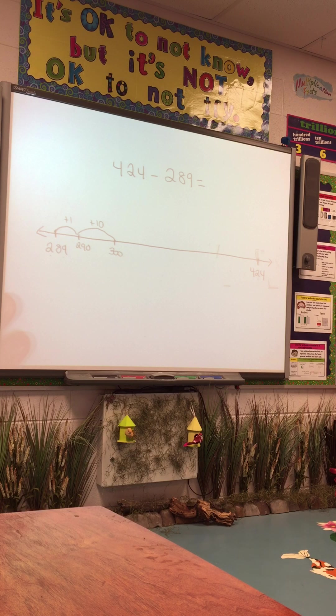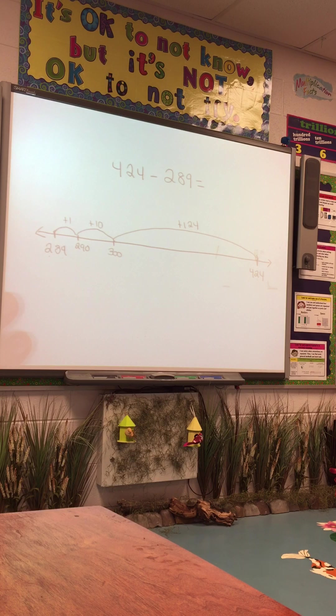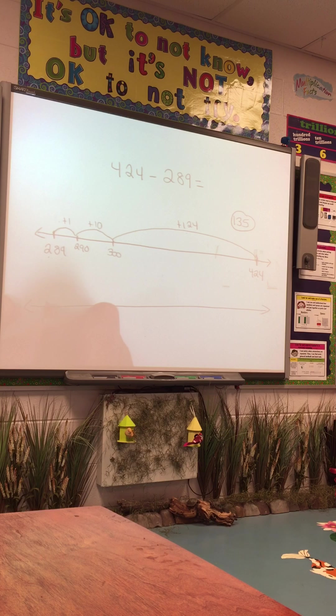I'm now at 300. Now depending on your child, some of them can see that 300 to 424 is 124. Some may need to break it down more, and that's okay. So from 300 to 424, that's plus 124. To get my difference, I have to add my jumps: 124 plus 10 is 134, plus 1 is 135.